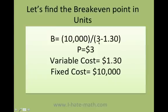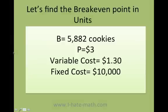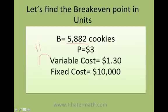I put the values into the formula and do the math. First I do the bottom: three minus one point three. I get that I need to sell at least five thousand eight hundred eighty-two cookies. I round this number up.